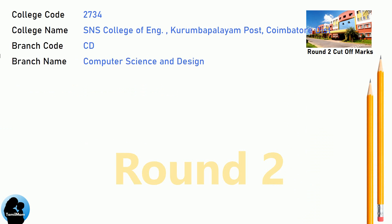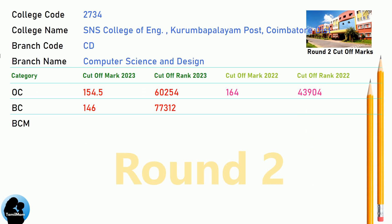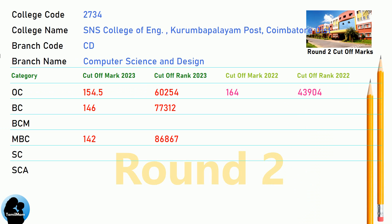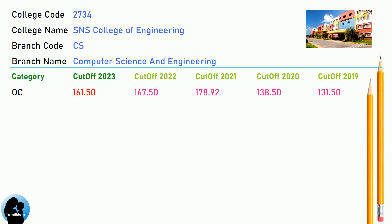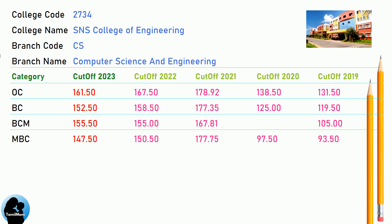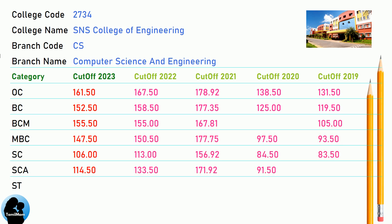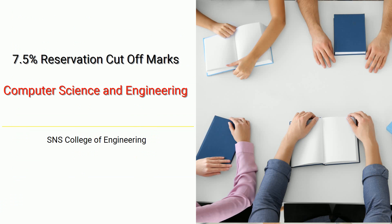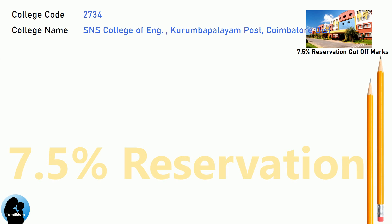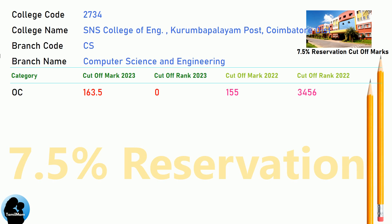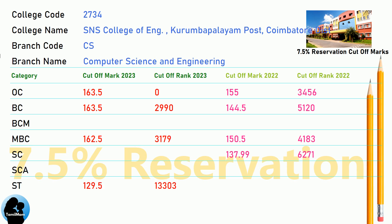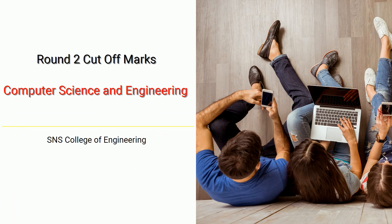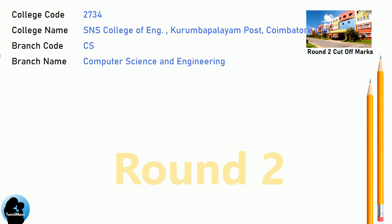DNA Cut-Off for ASNS College of Engineering in Computer Science and Engineering. DNA 7.5 Reservation Cut-Off for ASNS College of Engineering in Computer Science and Engineering.